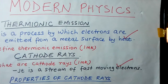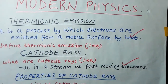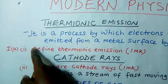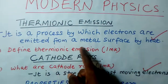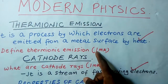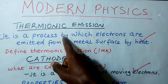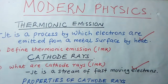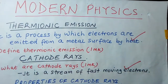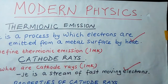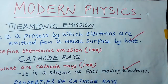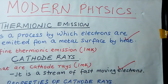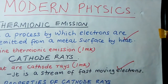So if somebody says define thermionic emission and has awarded one mark, when you state it like this, you already get your mark: a process by which electrons are emitted from a metal surface by heating.